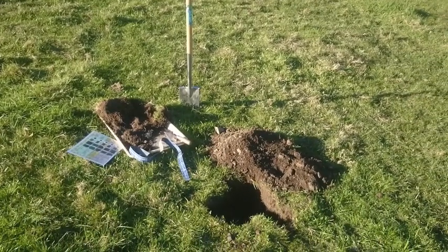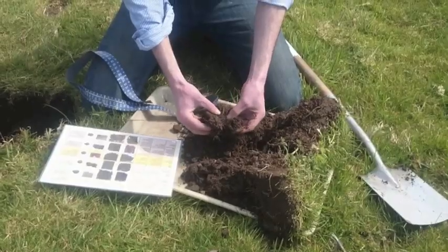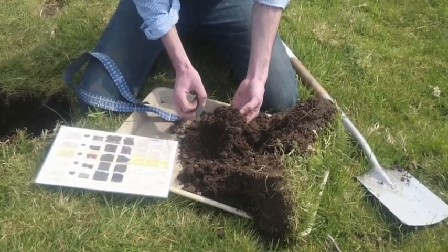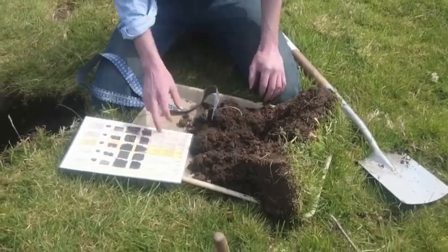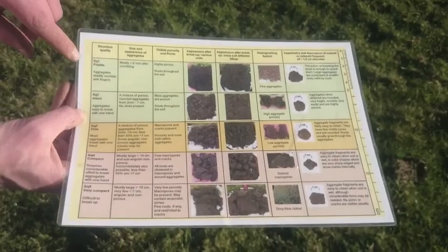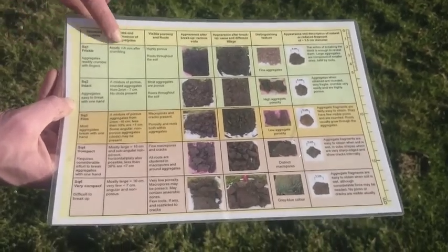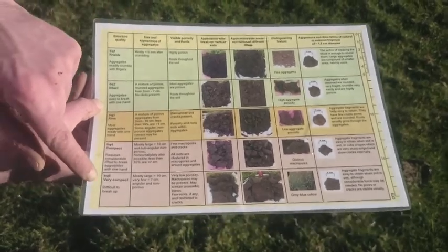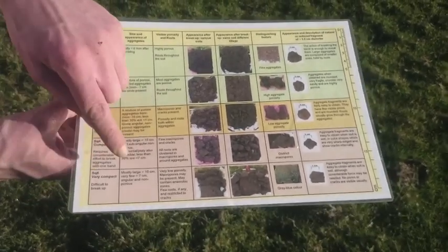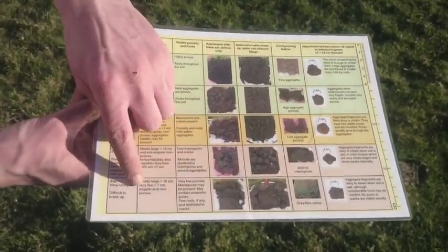The basic principle is that a sample block of soil is extracted by a spade and examined with regard to a number of properties, all with reference to a score sheet. The operator then applies numeric scores according to their observations. The scores range from SQ1, indicating good structural quality, to SQ5, indicating compact or poor structural quality.